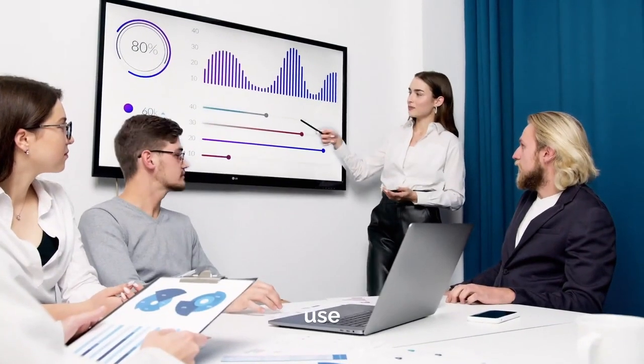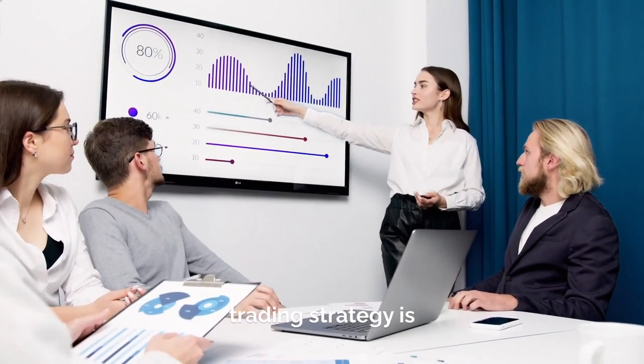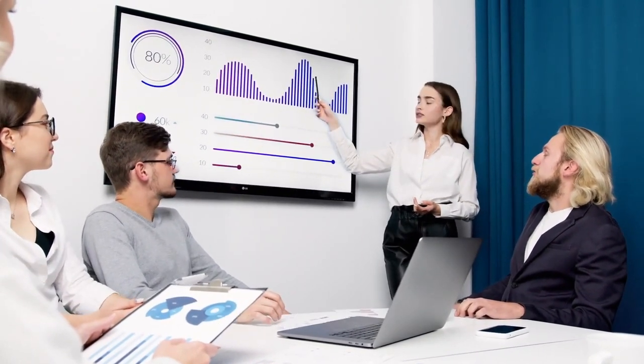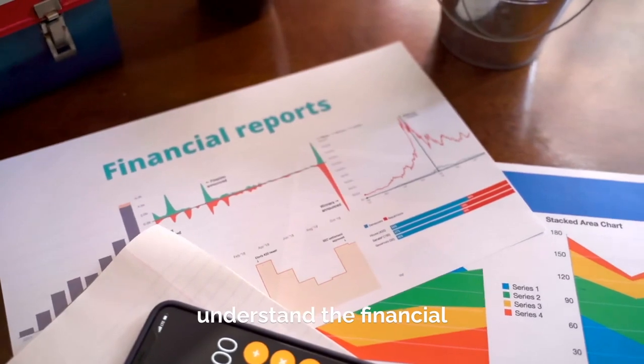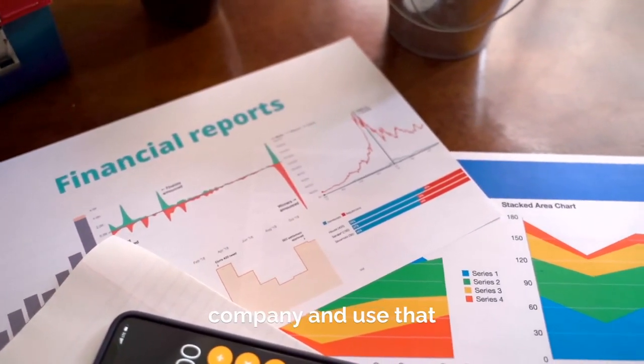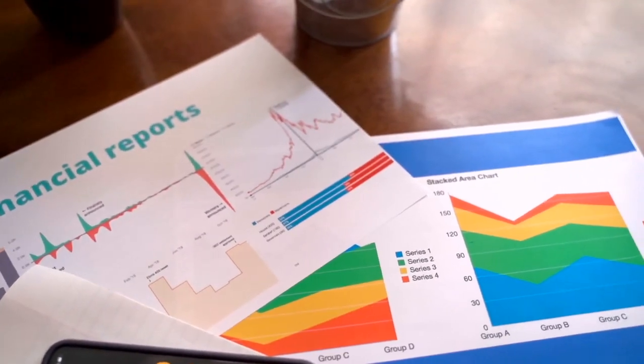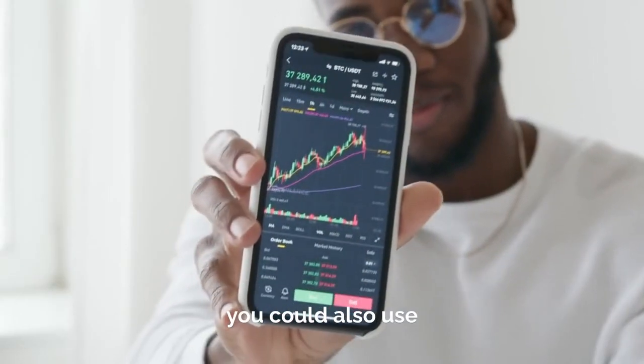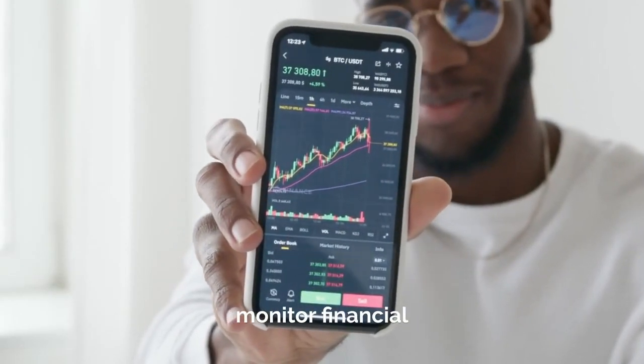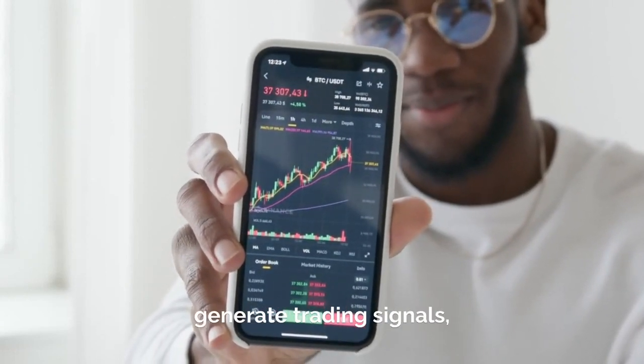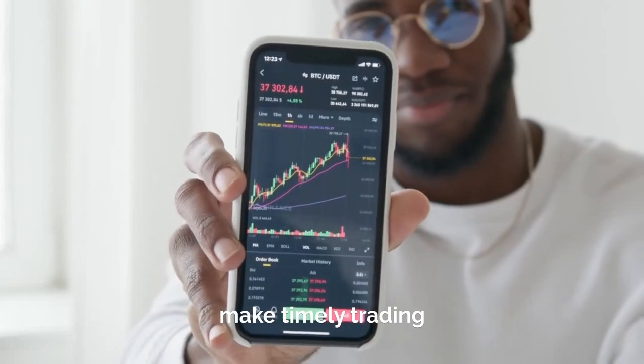Another way to use ChatGPT to create a stock trading strategy is to use it to analyze financial reports and earnings calls. You can use ChatGPT to understand the financial performance of a company and use that information to make decisions about whether to buy or sell its stock. Additionally, you could also use ChatGPT to monitor financial news and events, track financial indicators and generate trading signals, which can help you make timely trading decisions.